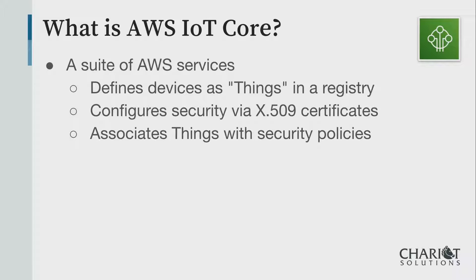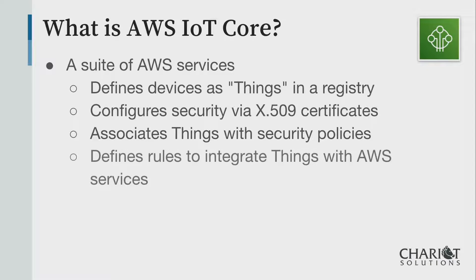You might have a policy that says 'I can talk on this particular topic' — add it to the certificates that need it. From there you can define rules. Amazon has IAM rules, the users and groups rules. There's also a special set of rules for IoT that you can wire up. For example, when a message comes in, you can deliver it to Kinesis or similar services.